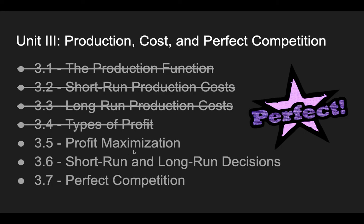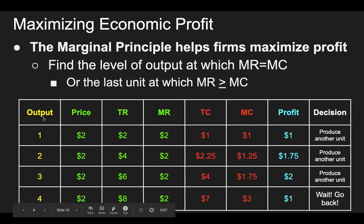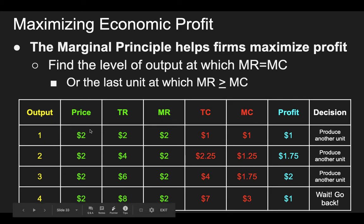The real goal is maximizing profit. The marginal principle helps us maximize profit by finding the level of output where MR equals MC — where marginal benefit equals marginal cost — or at the last unit where marginal revenue is greater than or equal to marginal cost. In this example, we've got output one through four. Price is constant at $2, so total revenue is just output times price: 2, 4, 6, 8. Marginal revenue is the added revenue with each new unit, and because price is constant at $2, so is marginal revenue.